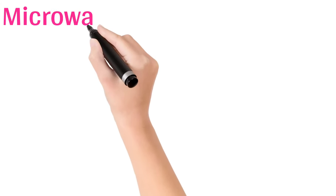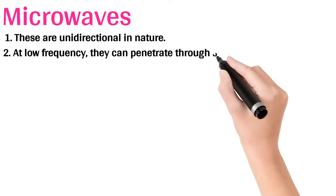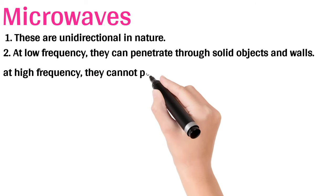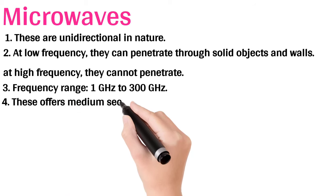Microwaves. These are unidirectional in nature. At low frequency, they can penetrate through solid objects and walls. At high frequency, they cannot penetrate.